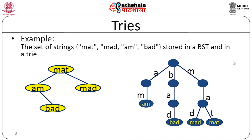Let us take an example. The set of strings — mat, mad, am, and bad — is represented on the left by a binary search tree, which you have already studied. Mat comes as the root since it is the first word, mad comes on the left-hand side, and so on. Now instead, let us look at this as a trie.